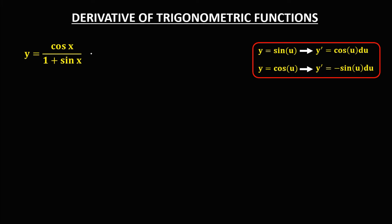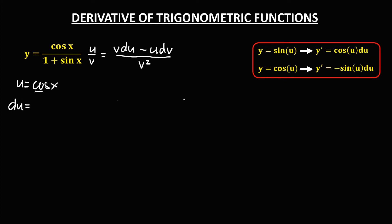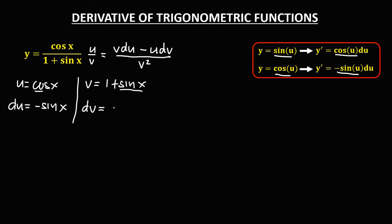For the next given, we use the quotient rule. For u over v, the derivative is v times the derivative of u, minus u times the derivative of v, all over v squared. Here u is cosine x, and the derivative of u is negative sine x. Then v is 1 plus sine x, and the derivative of v is 0 plus cosine x, which is cosine x.